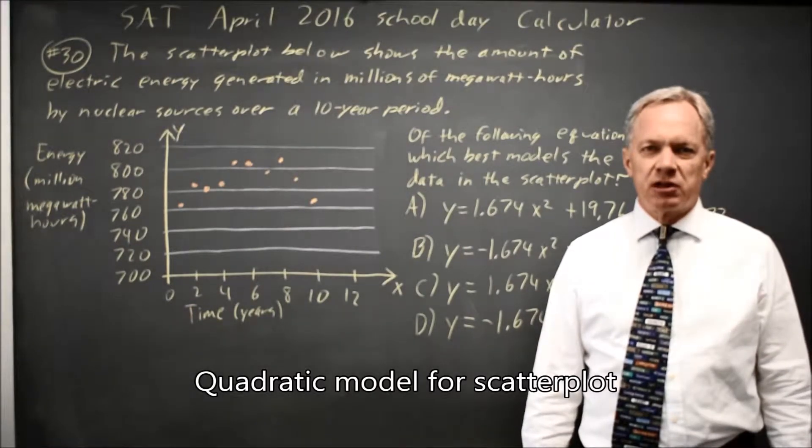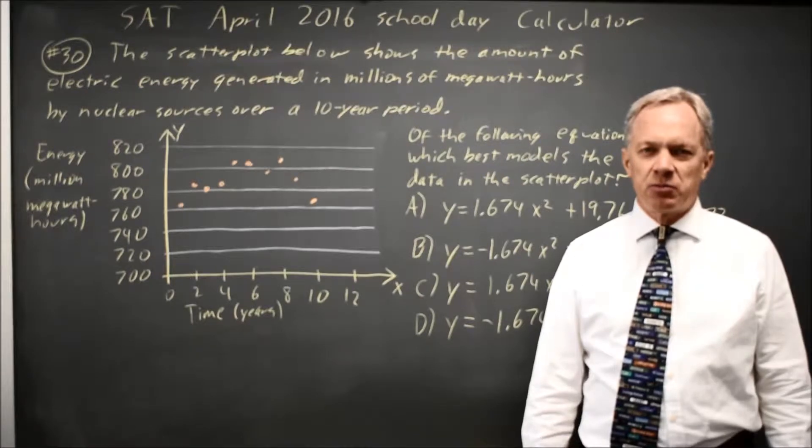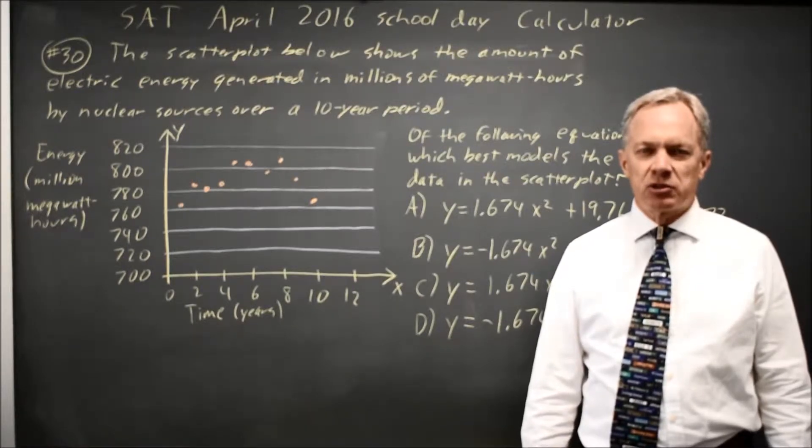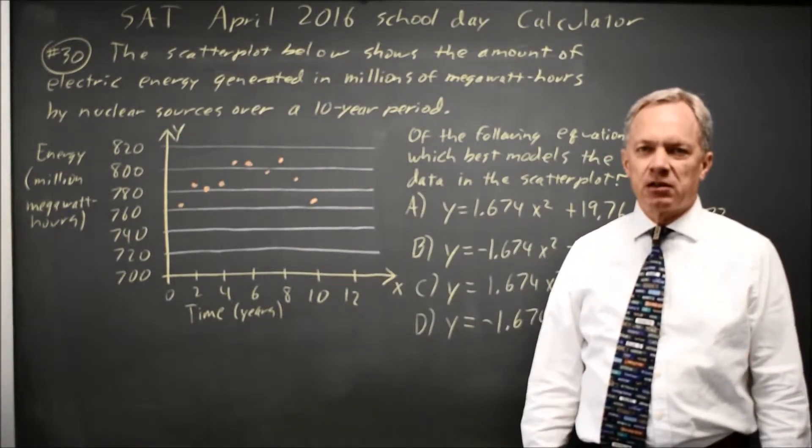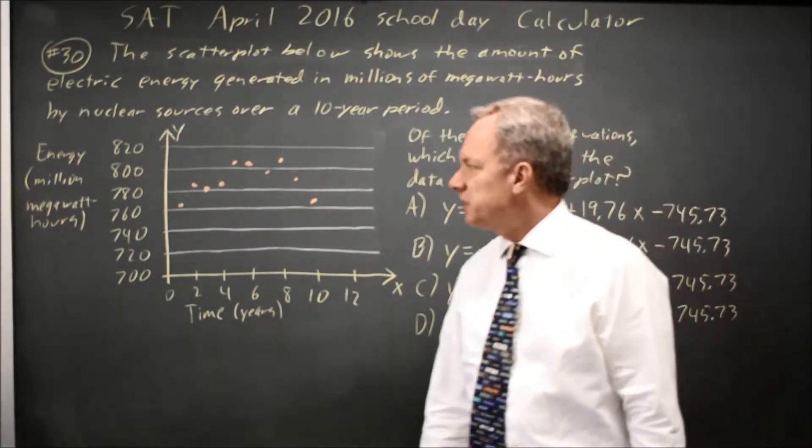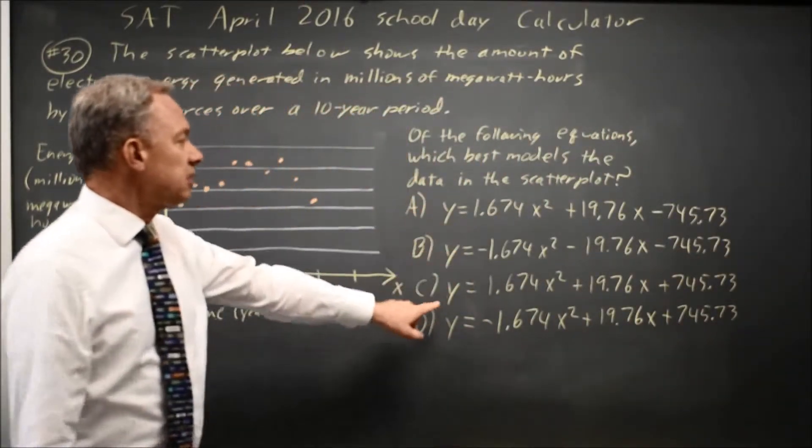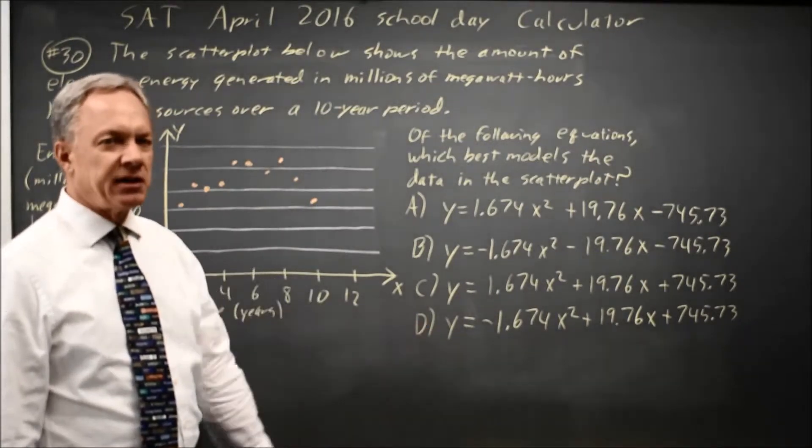This is calculator question number 30 from practice test 6 in the 2018 SAT prep book from College Board. It's also the April 2016 exam. College Board gives us a scatter plot of data for nuclear power production over the course of 10 years, and they ask which of these quadratic equations is the best model for the data.